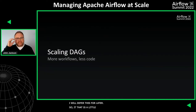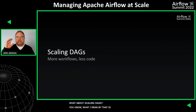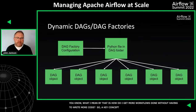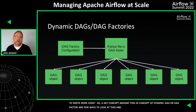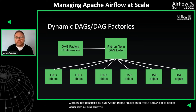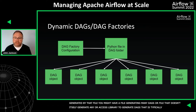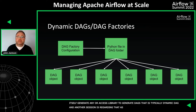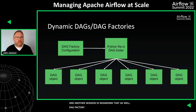What about scaling our DAGs? How do we get more workflows done without writing more code? A key concept here is the dynamic DAG or DAG factory. The Python file in the DAG folder is not itself the DAG — the DAG is a Python object generated by that file. You may have one file that generates many DAGs, or a file that acts as a library to other files that generate DAGs. A DAG factory takes some other configuration — JSON, YAML, or another resource — to inform that Python file exactly how to generate its DAG objects.